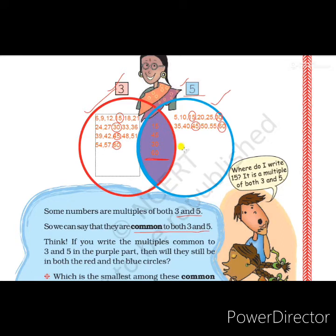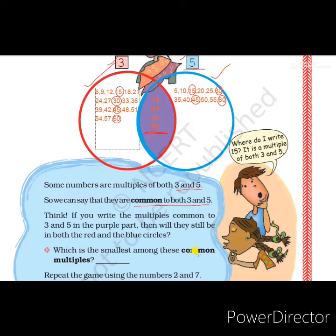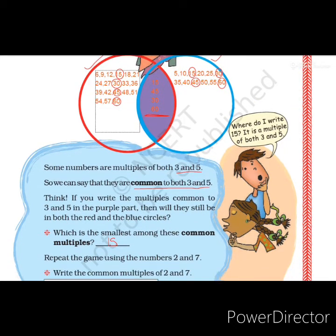Now think — if you write the multiples common to 3 and 5 in the purple part, will they still be in both the red and the blue circles? Yes, of course — these common multiples are common to both circles. Now, which is the smallest among these common multiples? Observe the numbers 15, 30, 45, 60 — among these, the smallest common multiple is 15. So the LCM of 3 and 5 is 15.